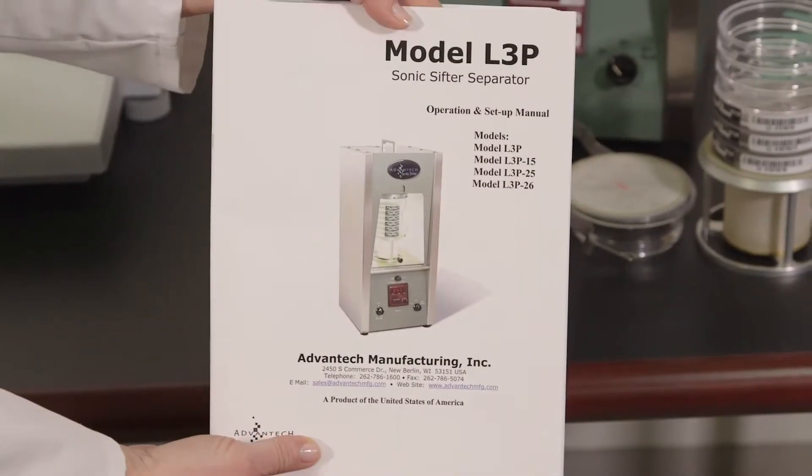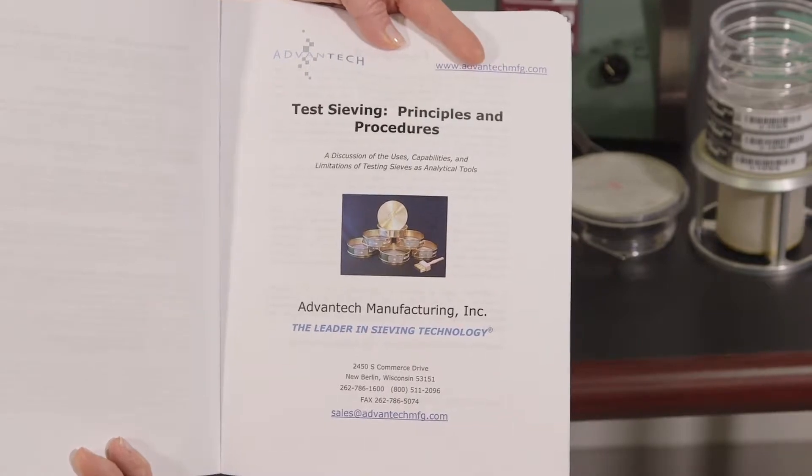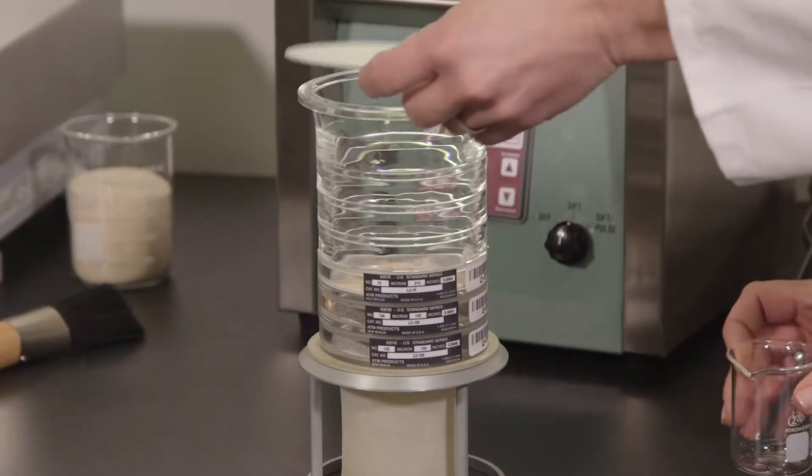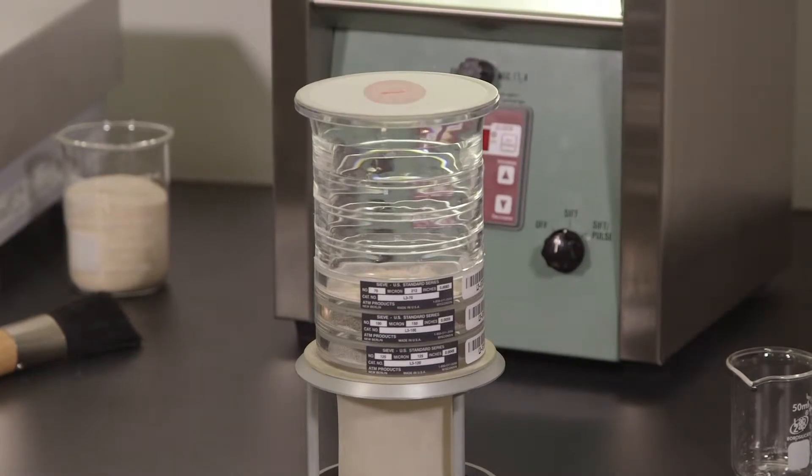Generally speaking, a smaller sample is better. Large samples will overcrowd the sieve and lead to blinding. Large samples may also yield inaccurate results, as not all particles will have equal opportunity to be passed or retained by the wire cloth openings.